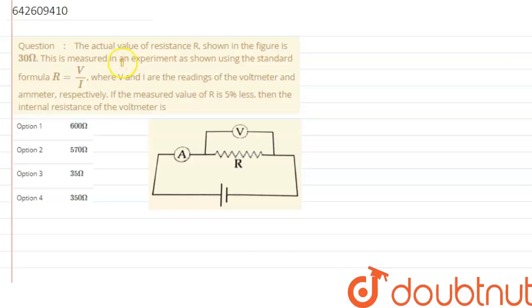Hello everyone, so we are given with a question which says the actual value of resistance capital R shown in the figure is 30 ohms. This is measured in an experiment as shown using standard formula R equals to V by I, where V and I are readings of voltmeter and ammeter respectively. If measured value of R is 5% less, then internal resistance of voltmeter is.